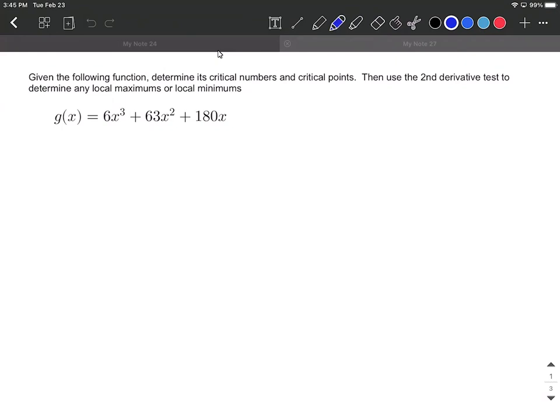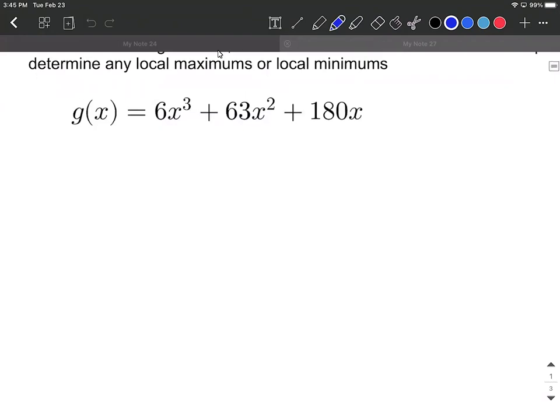First of all, what we want to do is get started by taking the derivative. So I'm going to zoom in here. Taking the derivative g'(x), we're going to use the power rule. With this one we can bring the exponent down, multiply it by 6, the coefficient out in front, so we get 18.